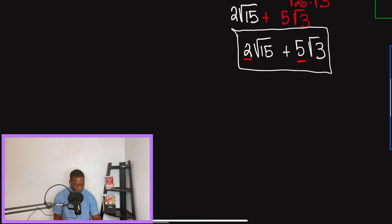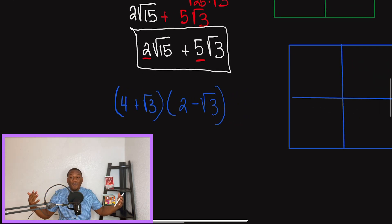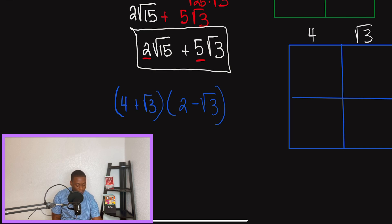So our second problem for the day, we're going to have, and it looks like I didn't write it. Let's write it in real quick. So our second problem is 4 plus radical 3, and we're going to distribute this to 2 minus radical 3. And with this example, to give you guys a better visualization, I'm going to use the box method because I'm just very visual. It makes it so much easier to see.